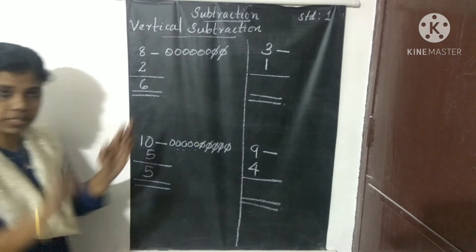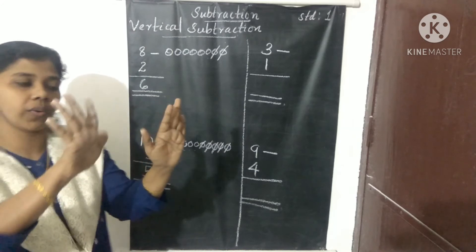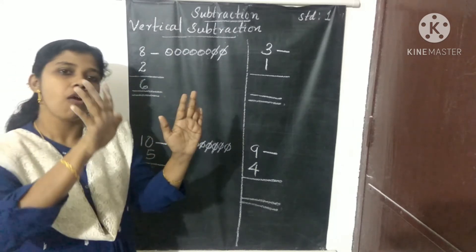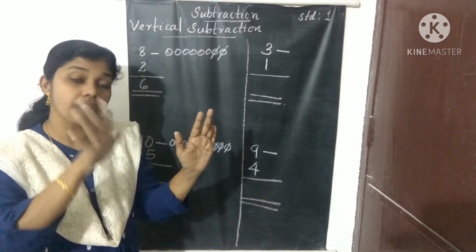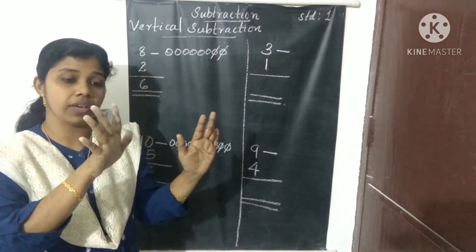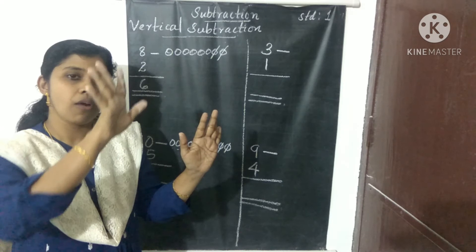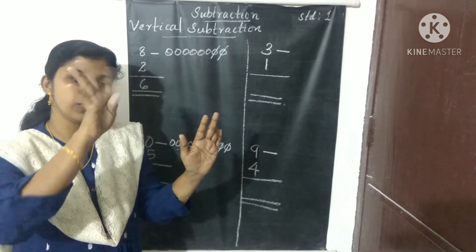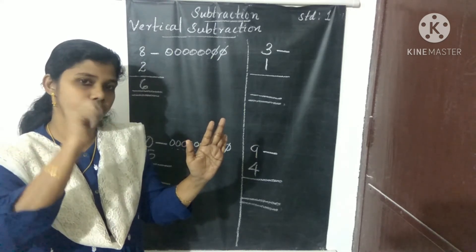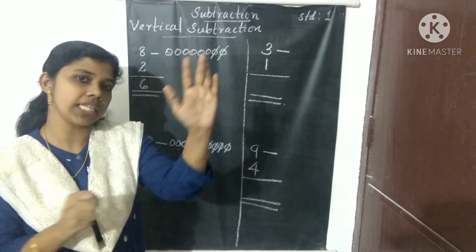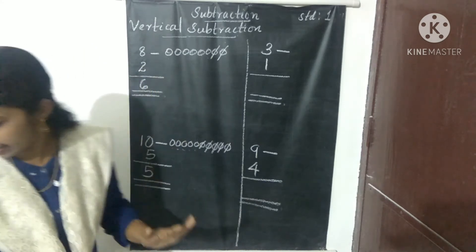Now using hands for 10 minus 5: take 10 in your hand — that is 5 and 5. Take away 5: 1, 2, 3, 4, 5 taken away. What is the balance? 5.